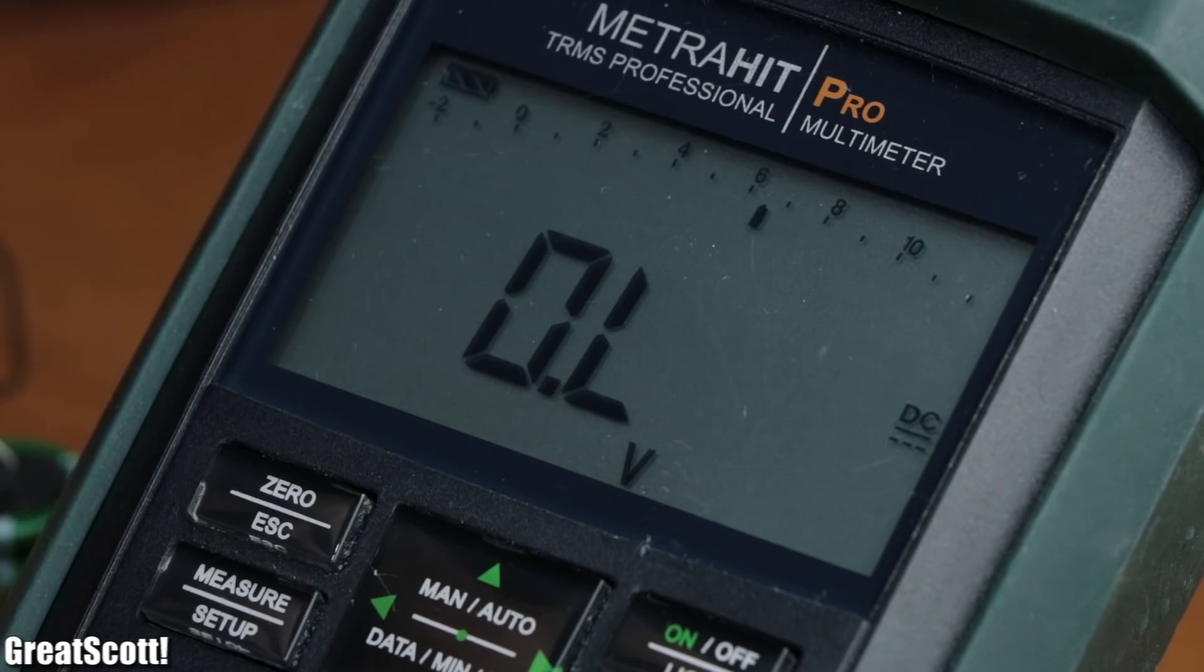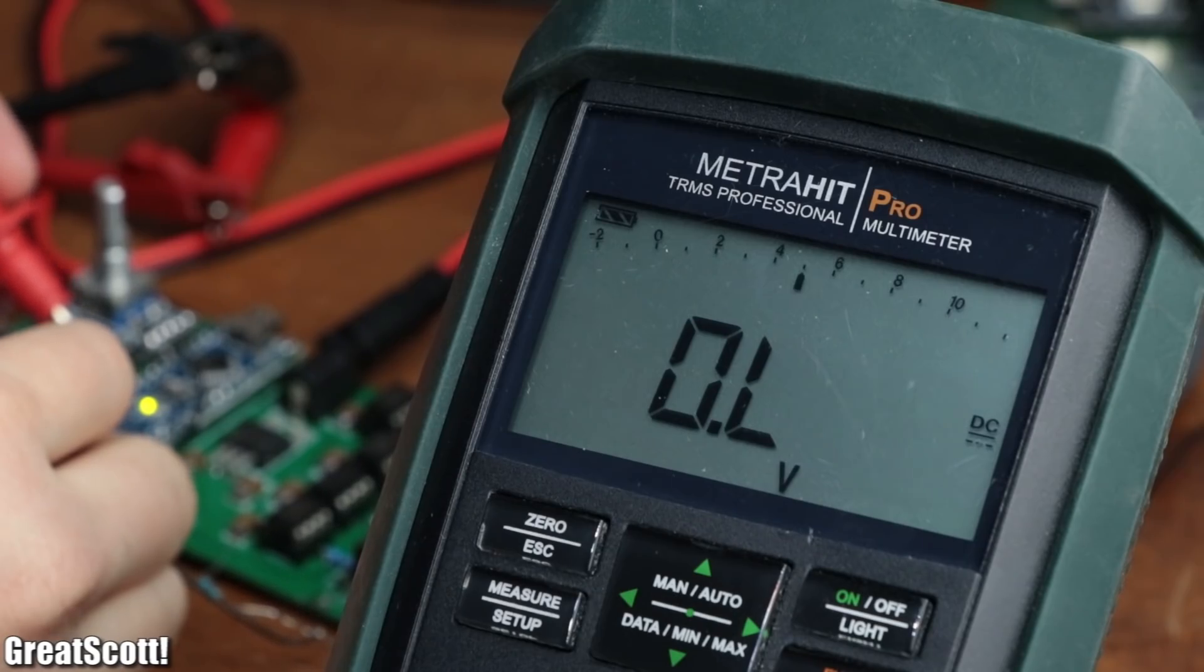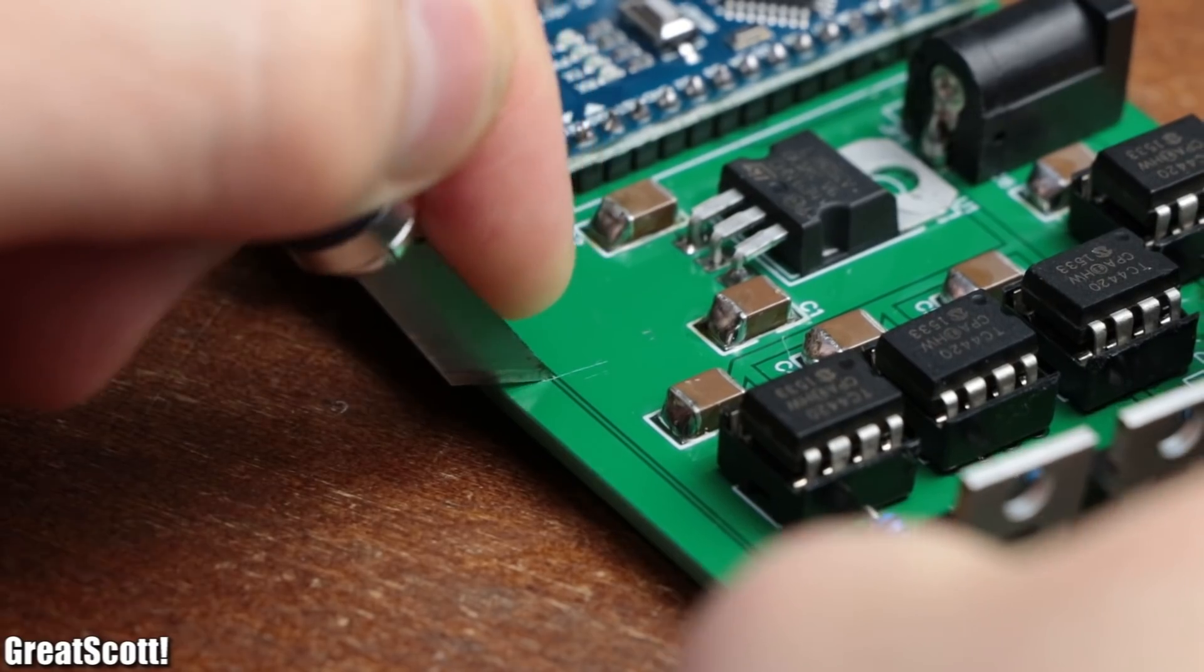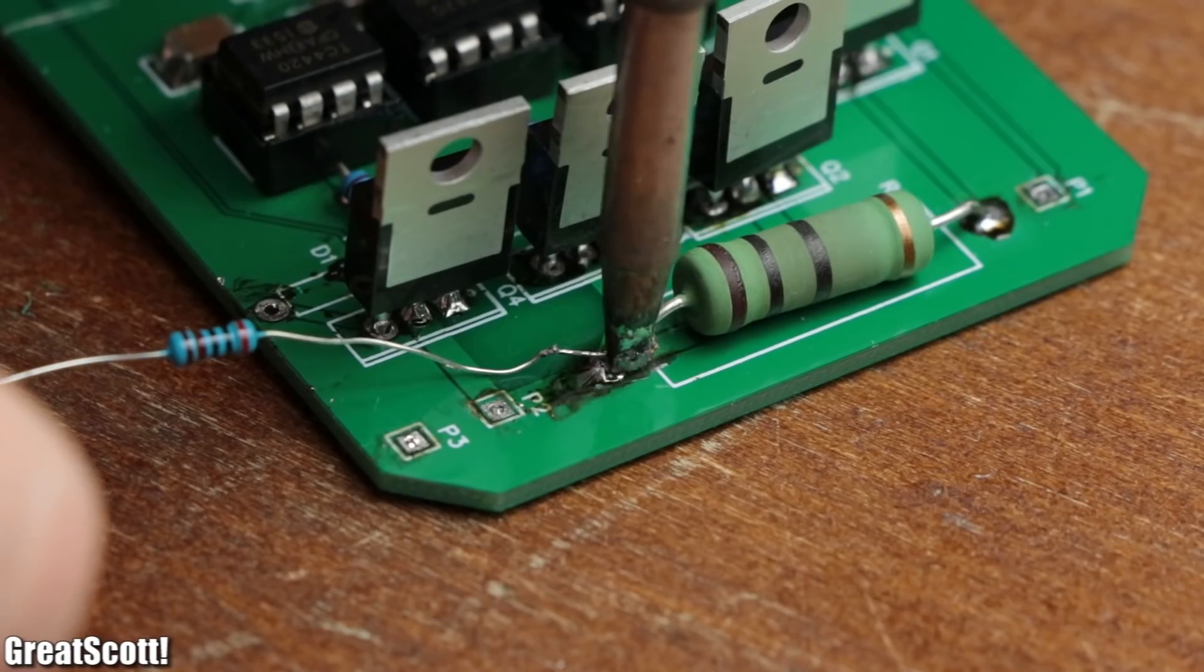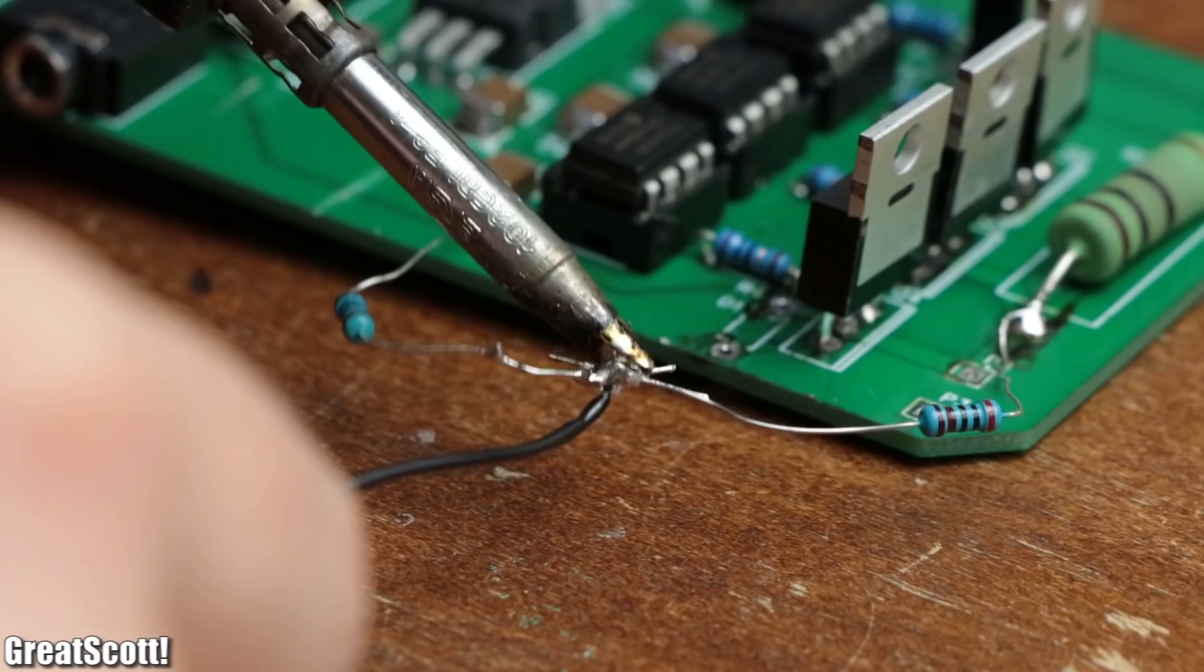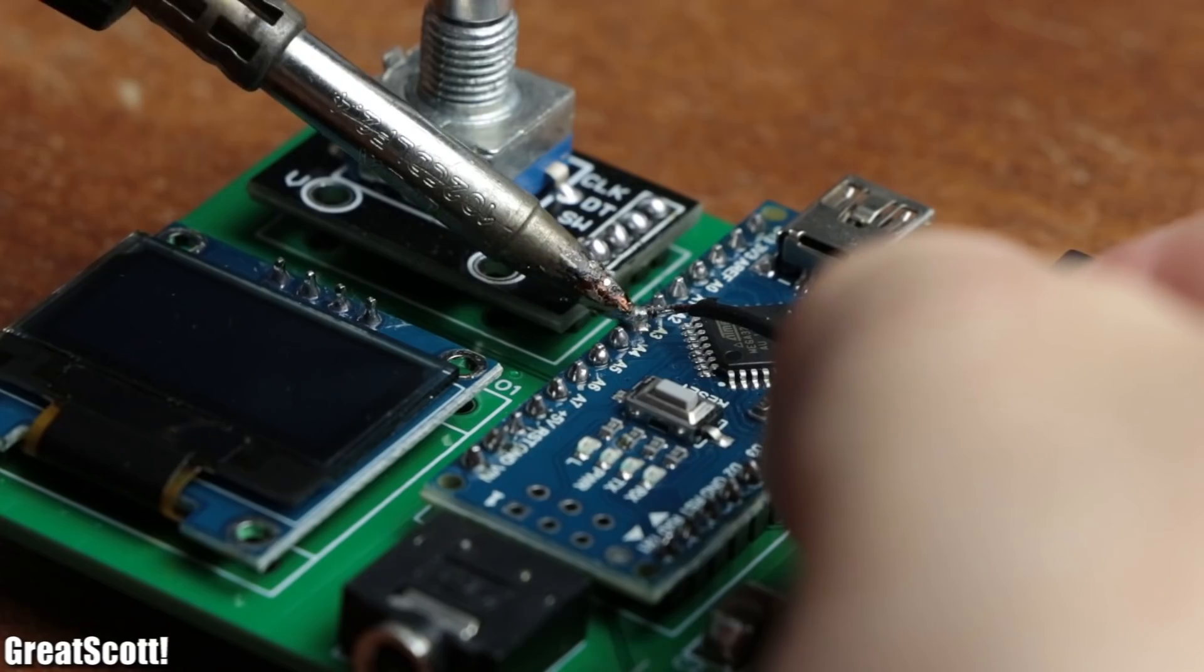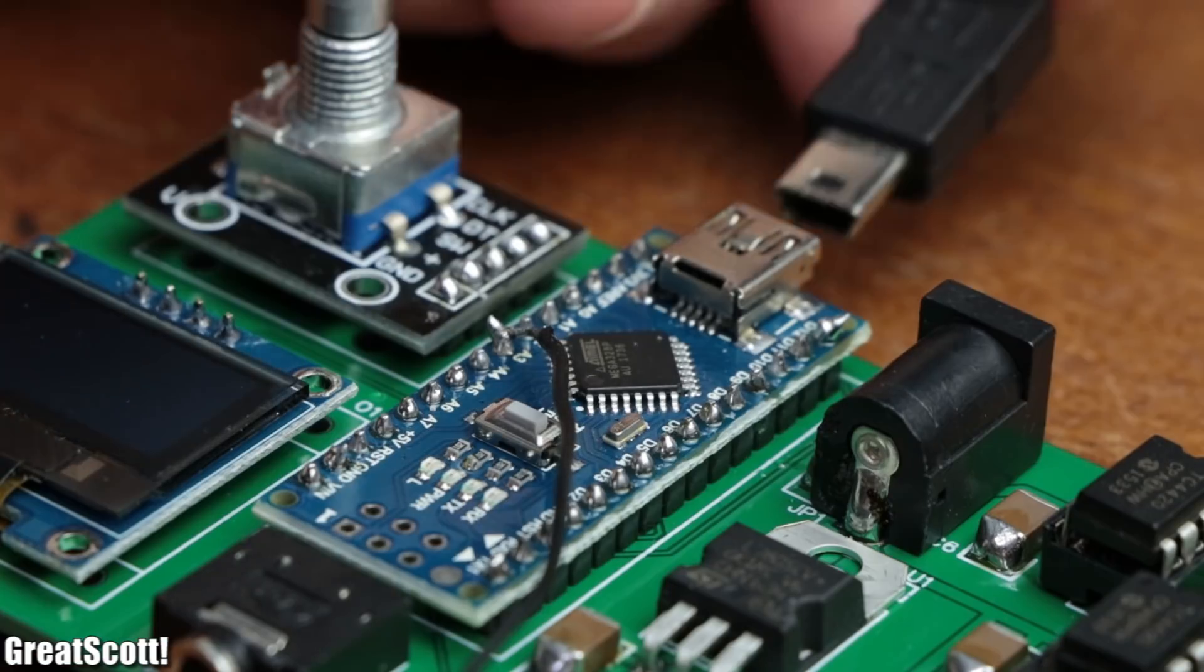Only problem was that the feedback voltage can easily exceed 5 volts, which the 5 volt Arduino certainly does not like. So as an afterthought, I interrupted the feedback copper trace and added a 2 kilo ohm slash 1 kilo ohm voltage divider to lower the voltage. And with that being done, the hardware was complete and it was time to program the microcontroller.